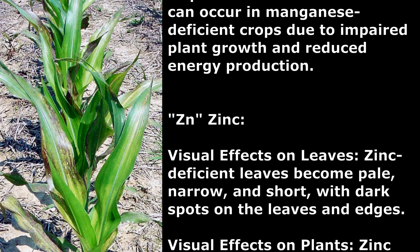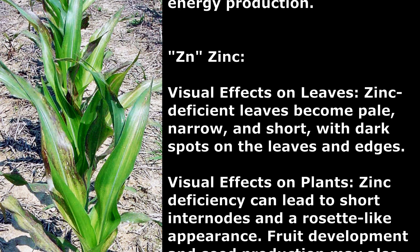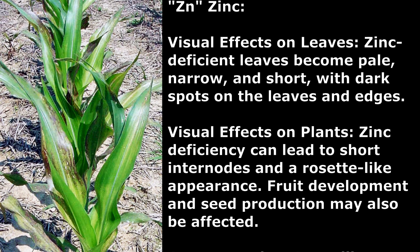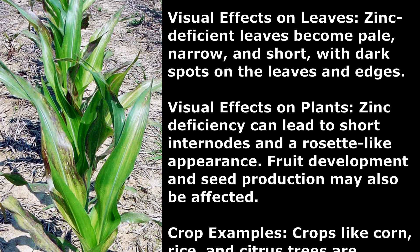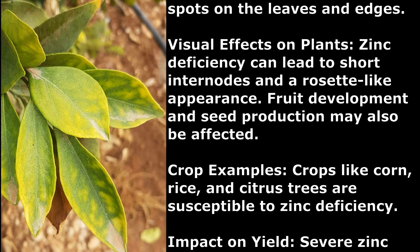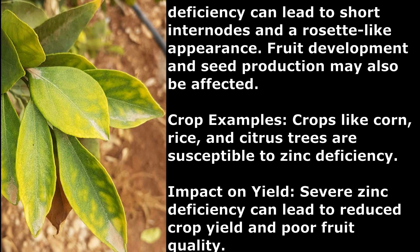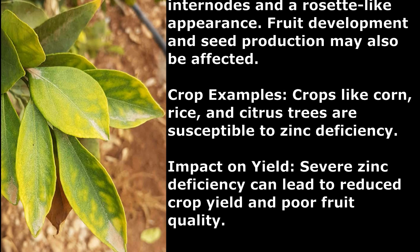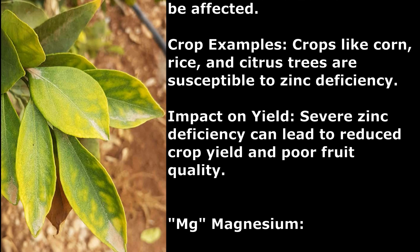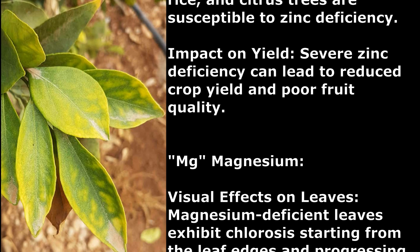Zinc. Visual Effects on Leaves: Zinc-deficient leaves become pale, narrow, and short, with dark spots on the leaves and edges. Visual Effects on Plants: Zinc deficiency can lead to short internodes and a rosette-like appearance. Fruit development and seed production may also be affected. Crop Examples: Crops like corn, rice, and citrus trees are susceptible to zinc deficiency. Impact on Yield: Severe zinc deficiency can lead to reduced crop yield and poor fruit quality.